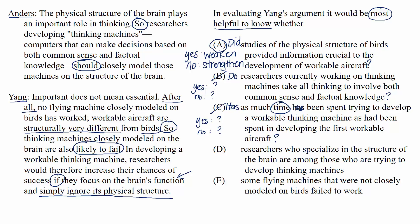D: researchers who specialize in the structure of the brain are among those who are trying to develop thinking machines. As a question: are researchers who specialize in the structure of the brain among those trying to develop thinking machines? We don't care about the answer to this. Whether there's overlap between these two groups or not doesn't affect Yang's argument either way.